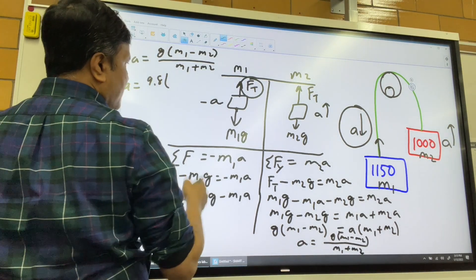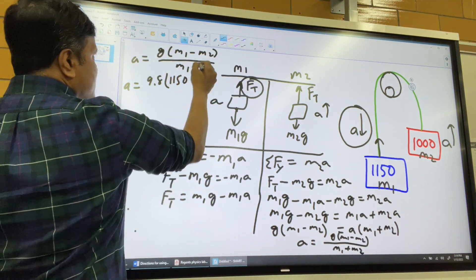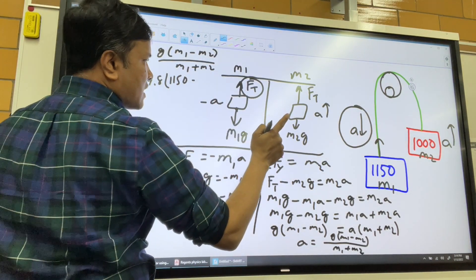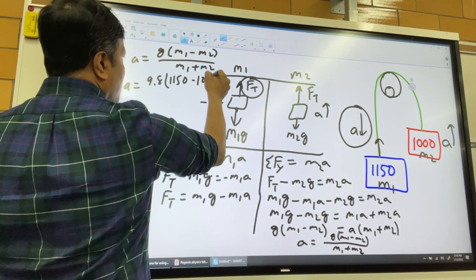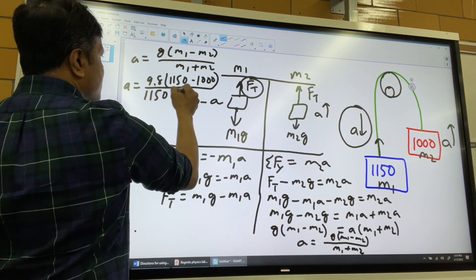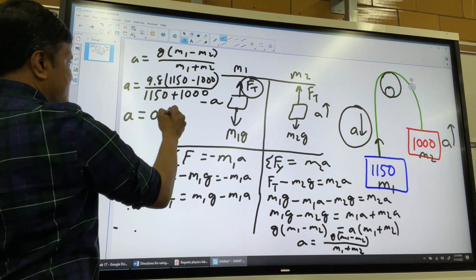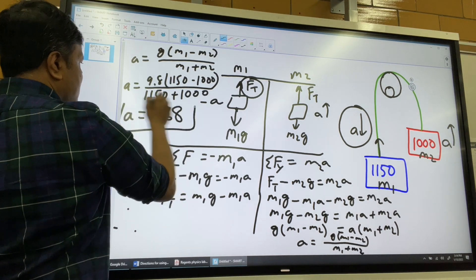So acceleration is G, which is 9.8, times M1, which is 1150, minus M2, which is 1000, over 1150 plus 1000. So acceleration is 0.68 meters per second squared.